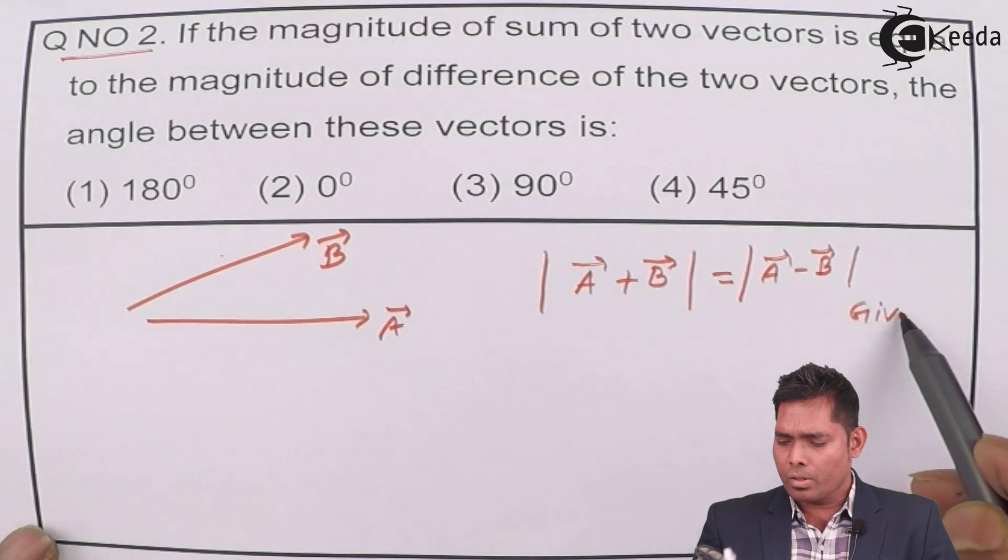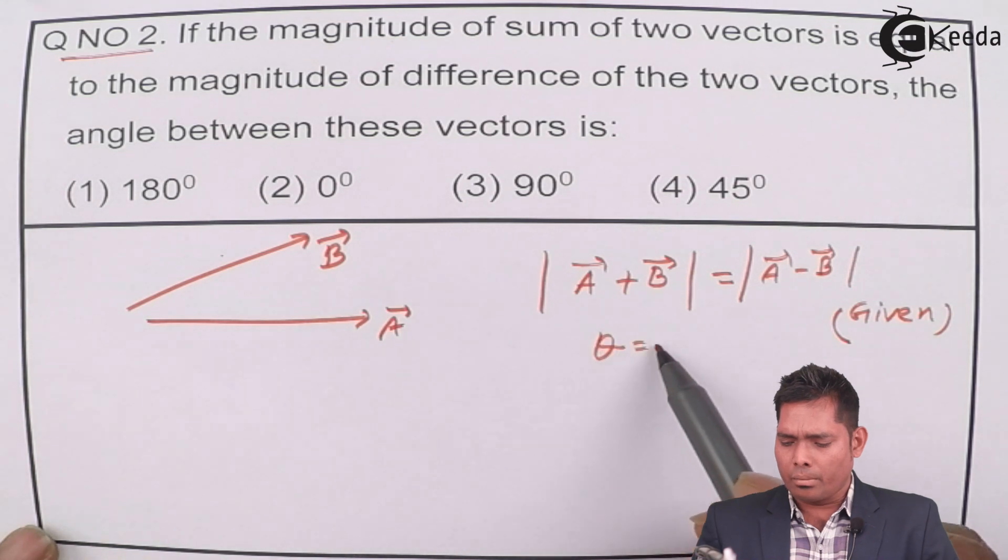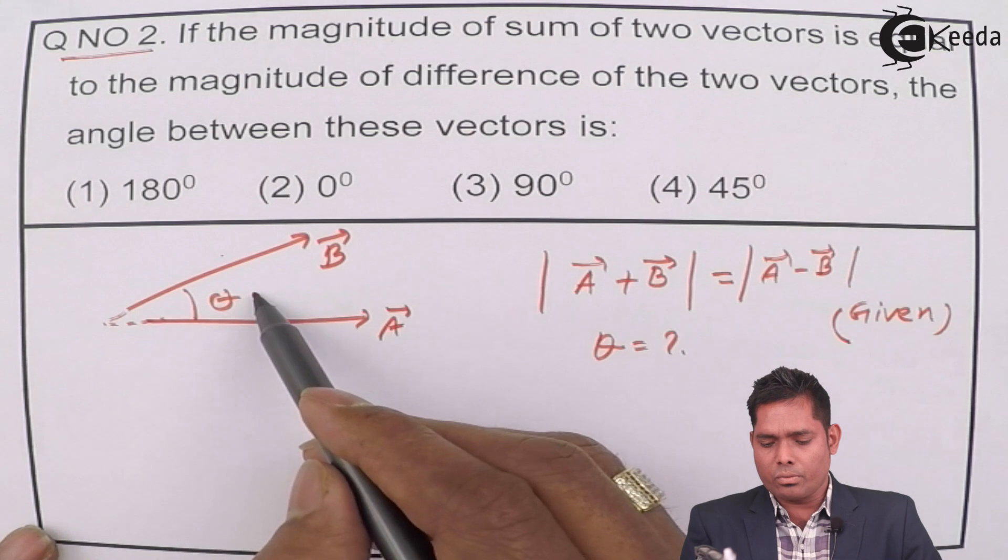if this is given, then you have to find the angle between these vectors, theta you have to find.